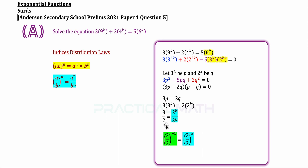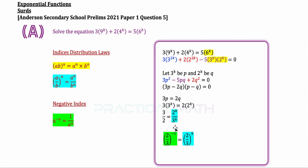The base on the left is different from the base on the right, so we need to change the left-hand base to match the two-thirds base on the right. Since they are reciprocals of each other, we use the negative index law: a to the power of negative n is the same as 1 over a to the power of n. Taking the reciprocal gives us a base of two-thirds with a power of negative 1. Now both sides share the same base of two-thirds, so the powers must be equal, giving us k equals negative 1 for the first solution.